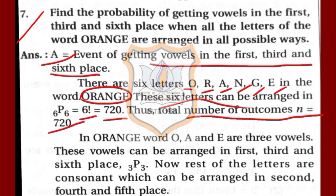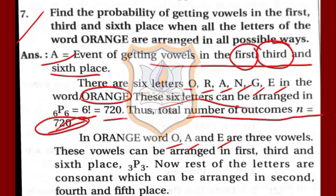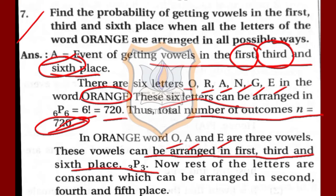In the word ORANGE, the vowels are O, A and E. These three vowels are to be arranged in the first, third and sixth places. There are three places and three vowels, so they can be arranged in 3P3 ways. The remaining three letters — R, N and G — can be placed in the second, fourth or fifth positions, also arranged in 3P3 ways.